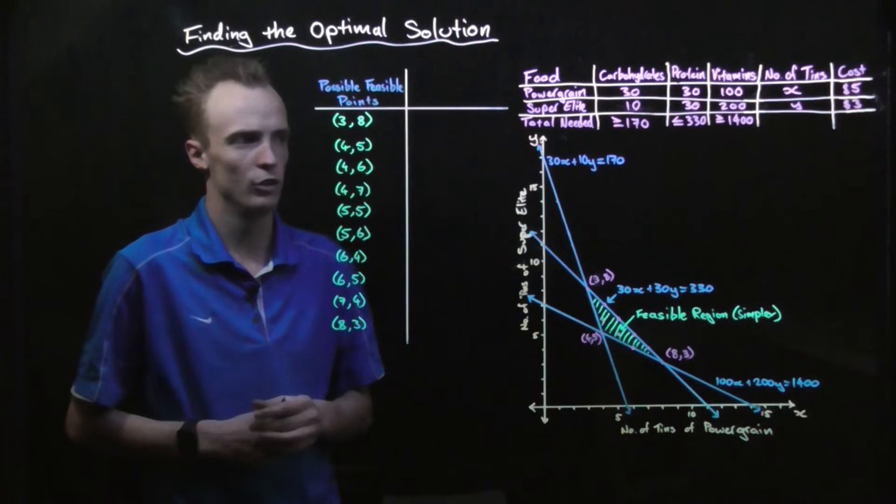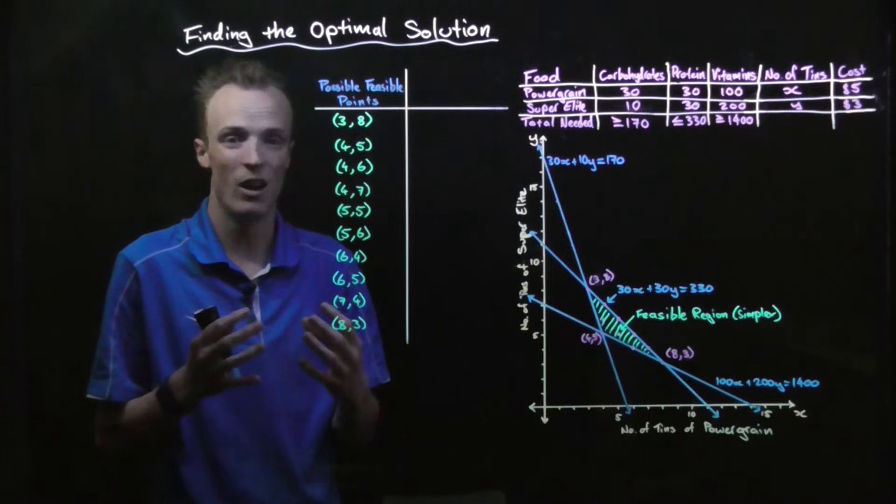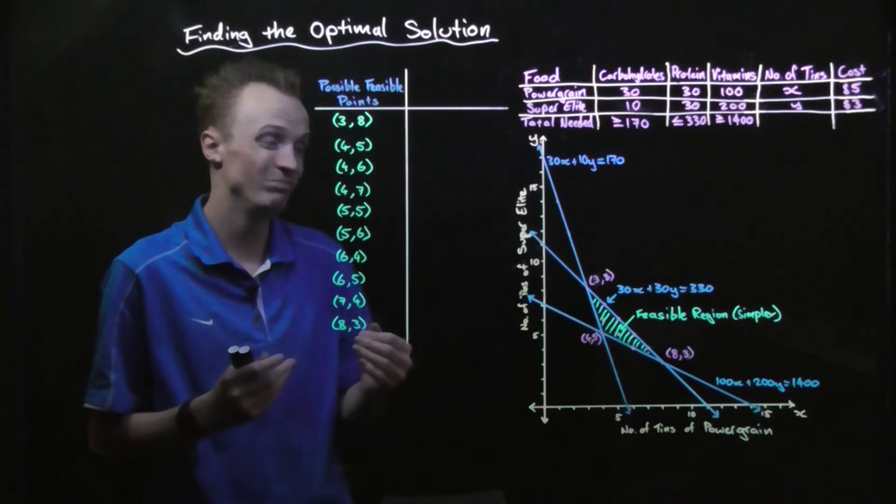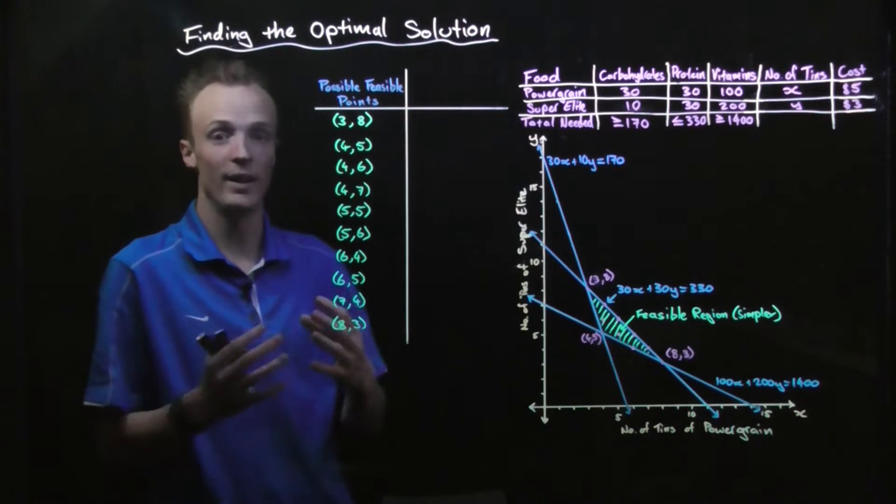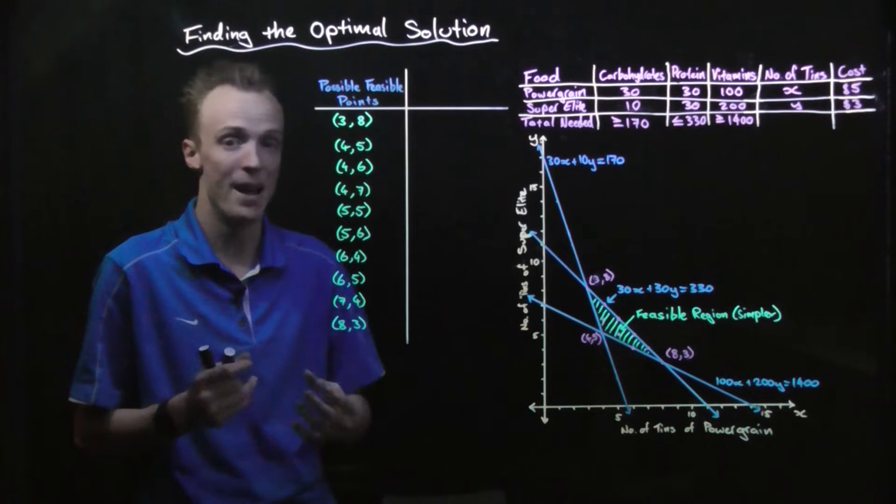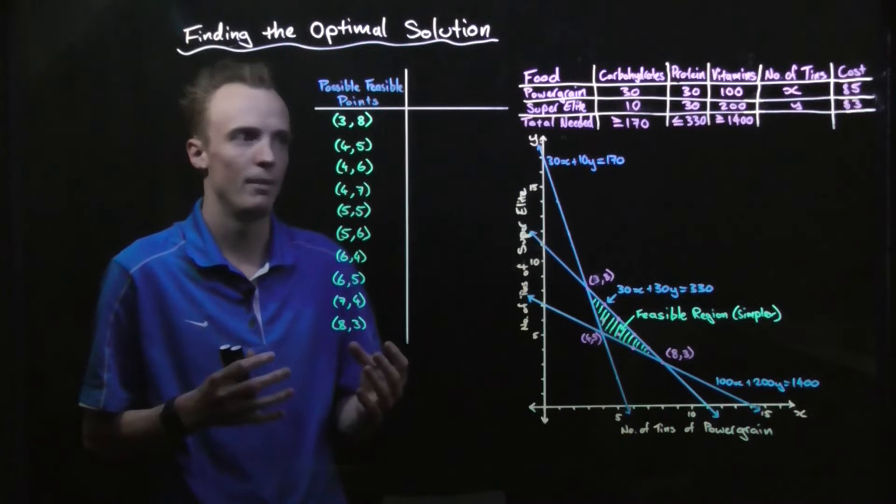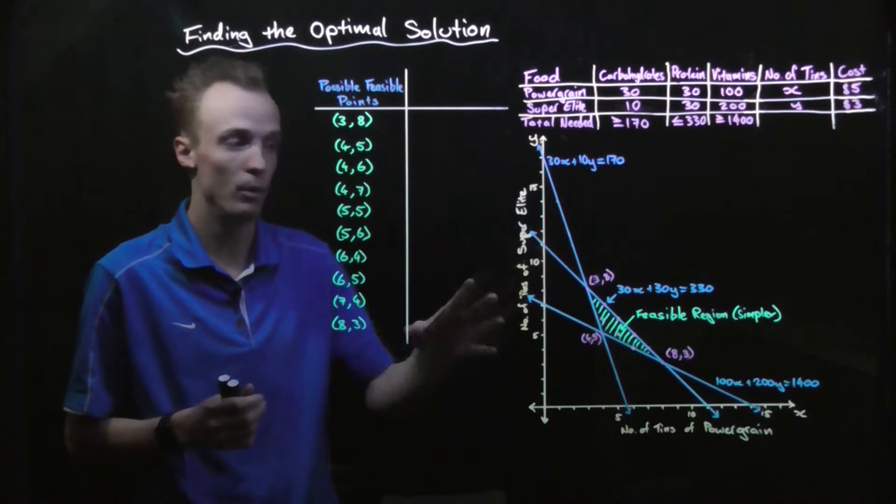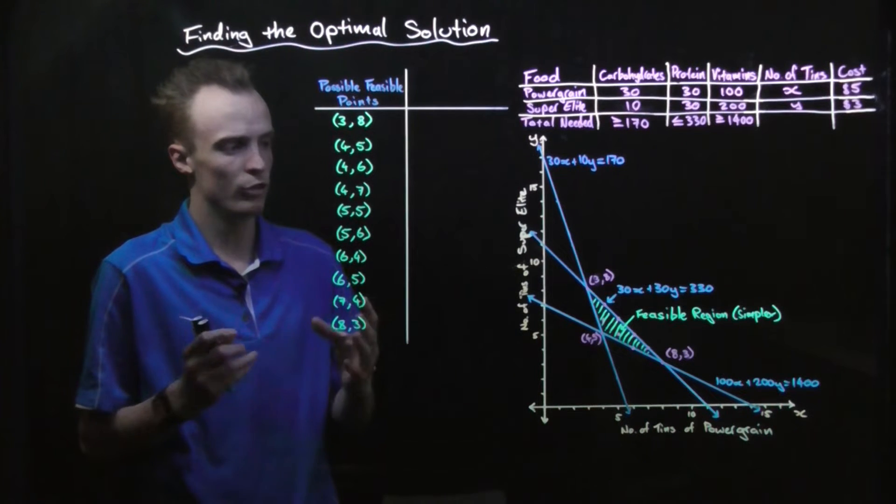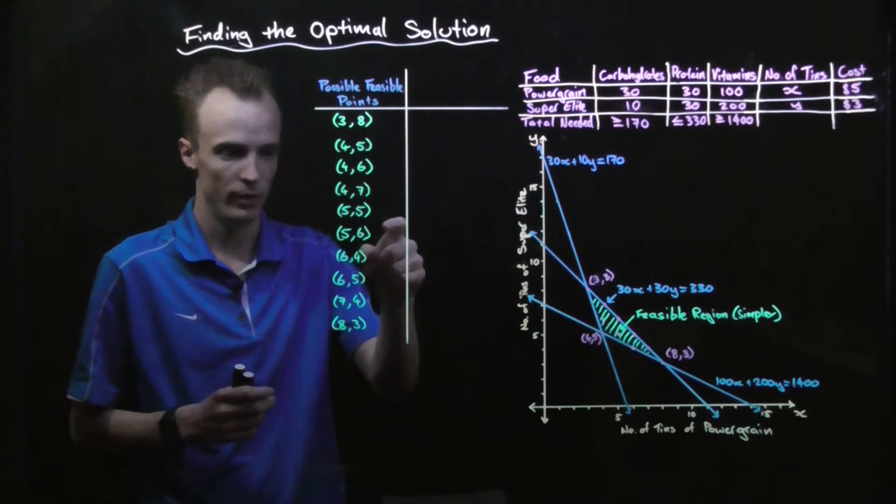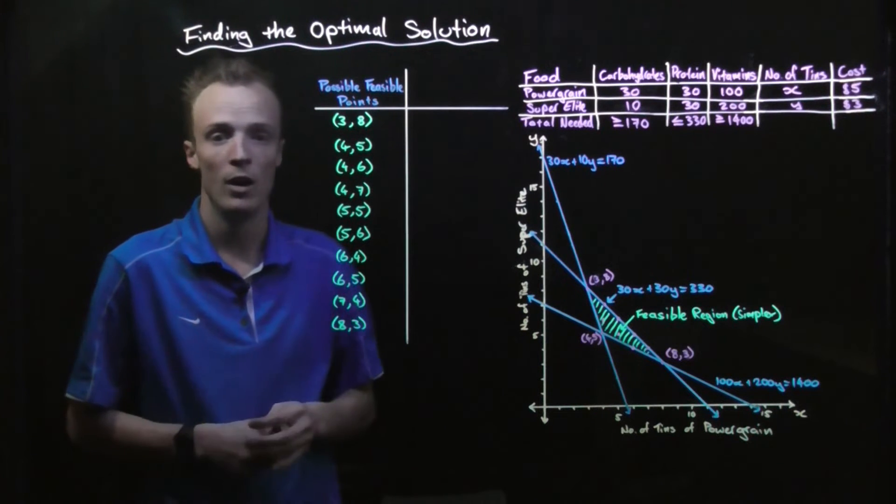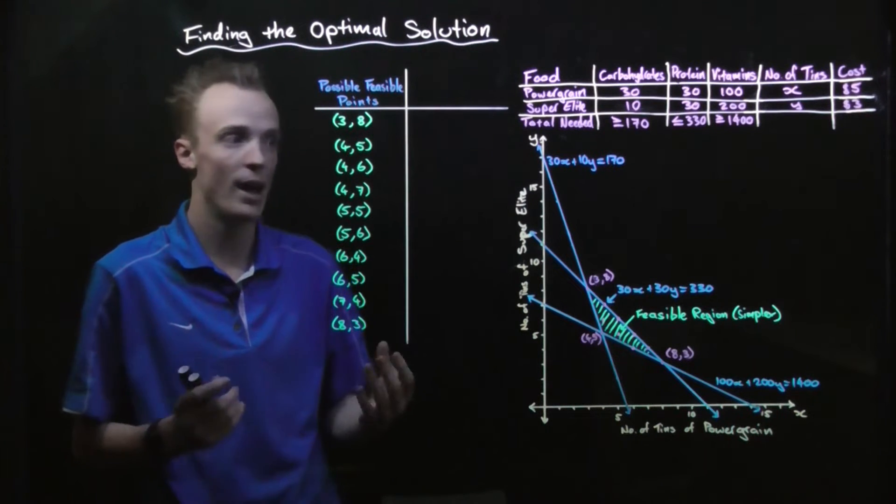When we're talking about an optimal solution, we're talking about finding either a maximum of something, for example if we're running a business we might want to find the maximum profits, or finding a minimum of something. For this example we might want to try and find which combination of cans of these foods would give us the minimum cost to our athlete.